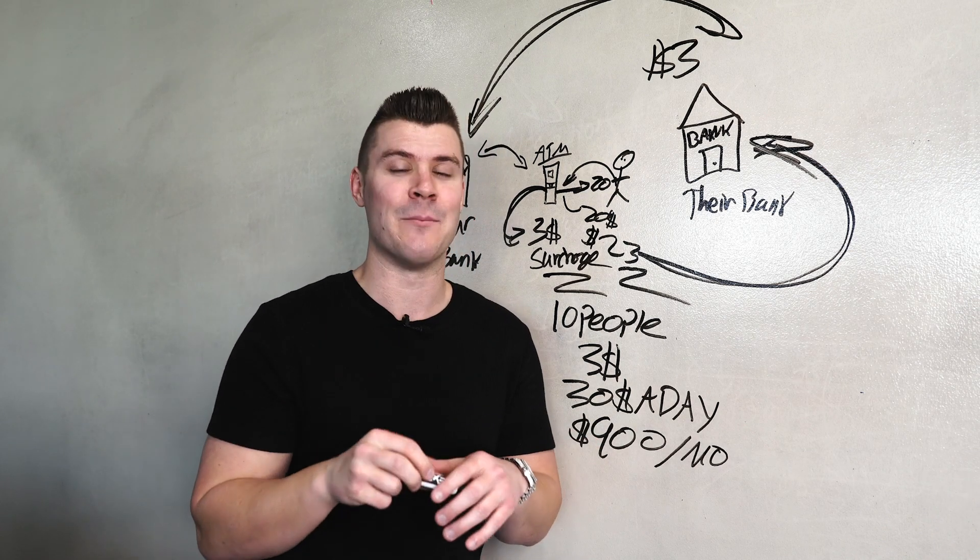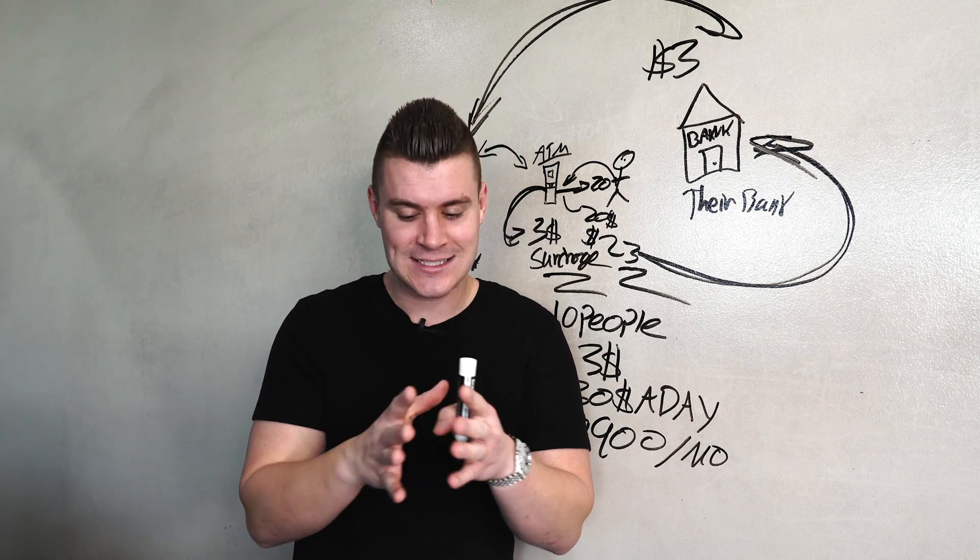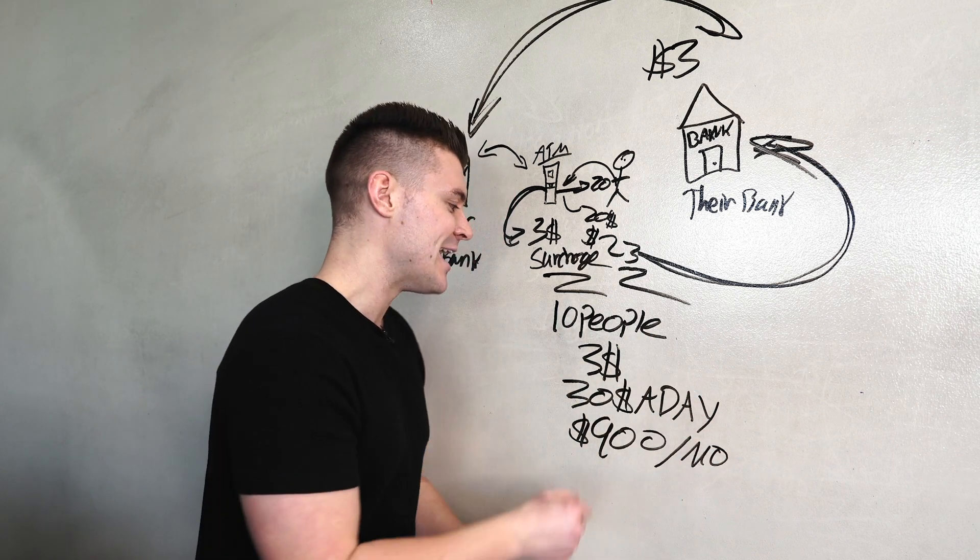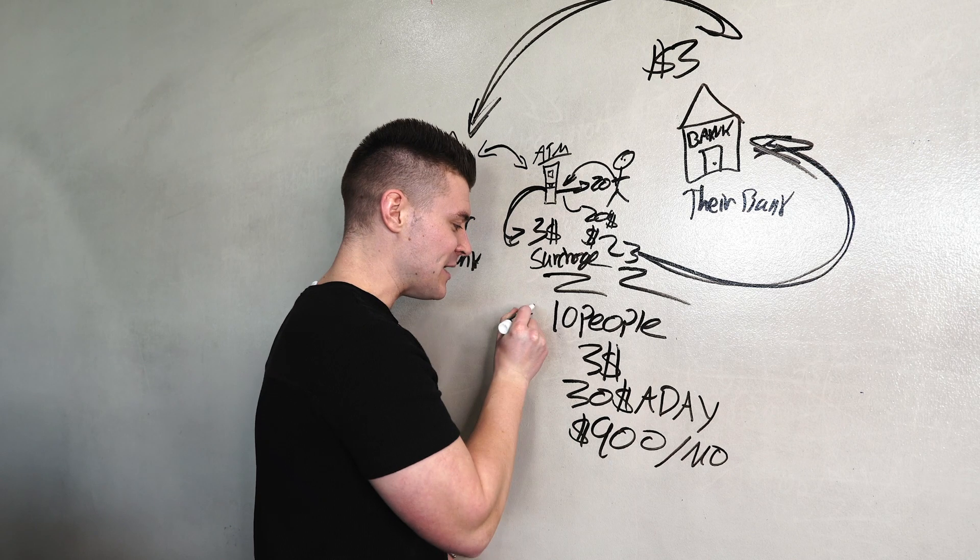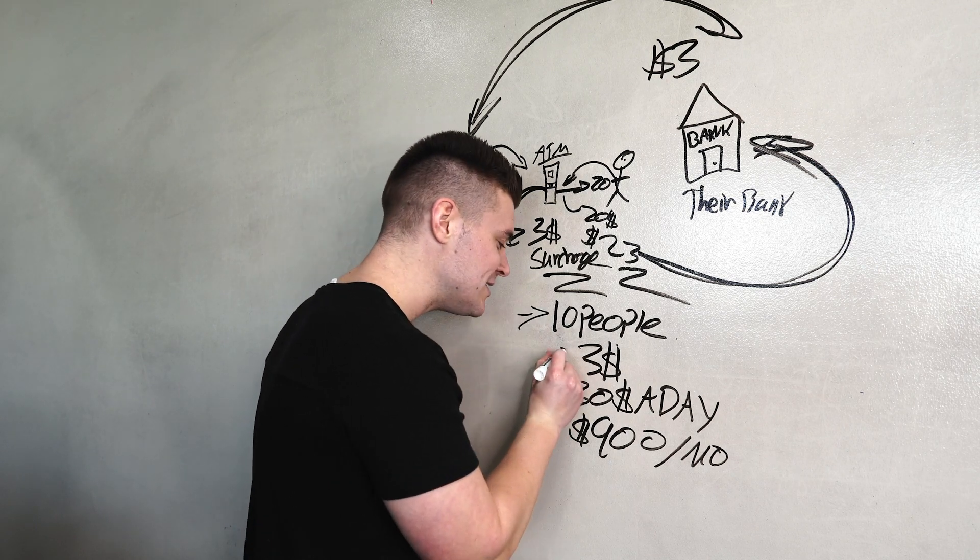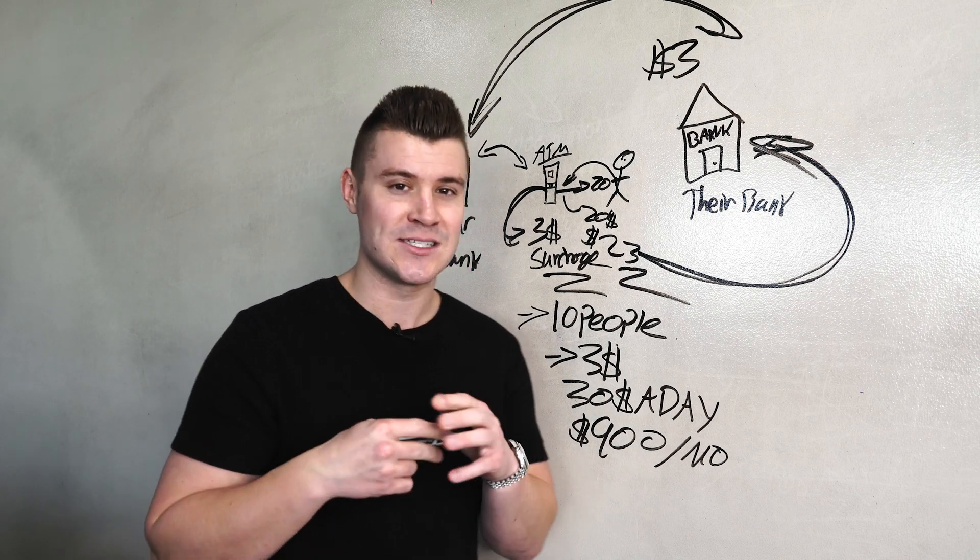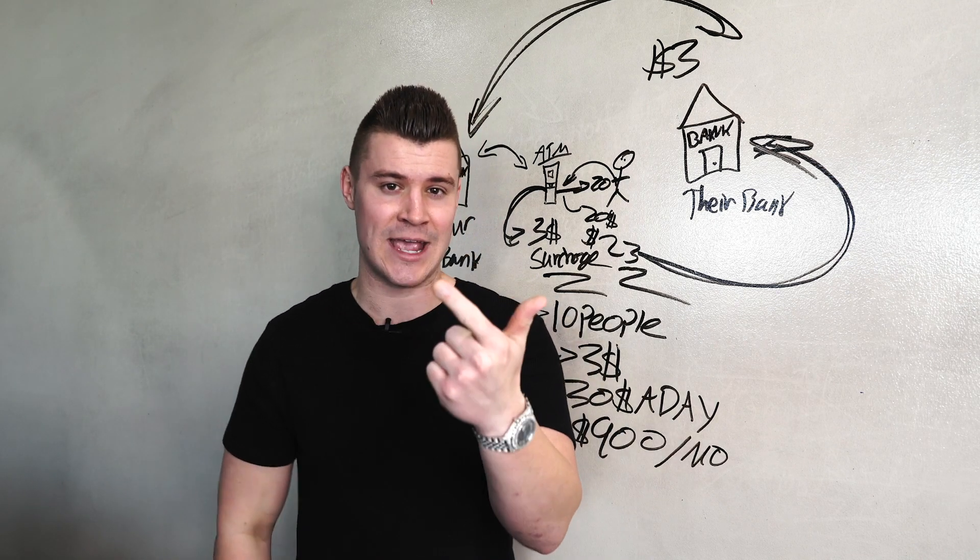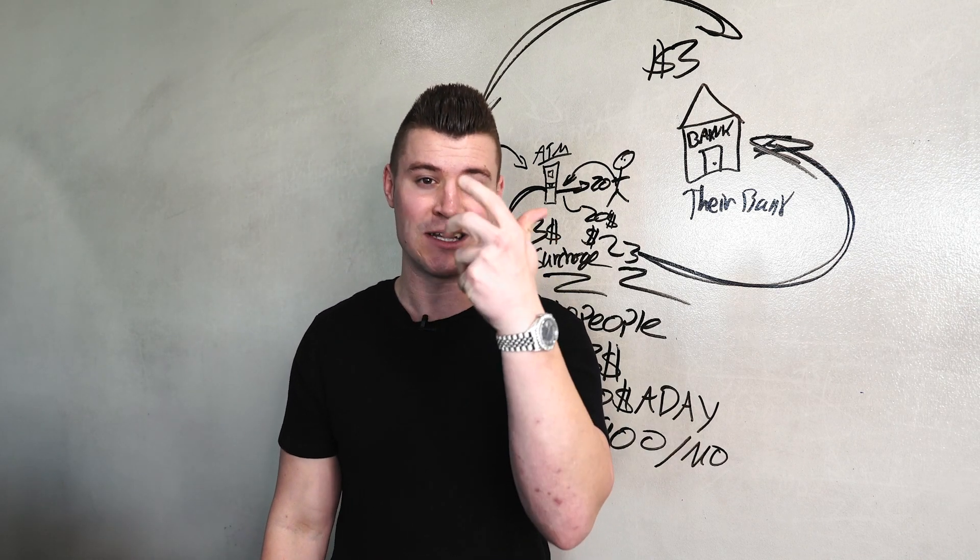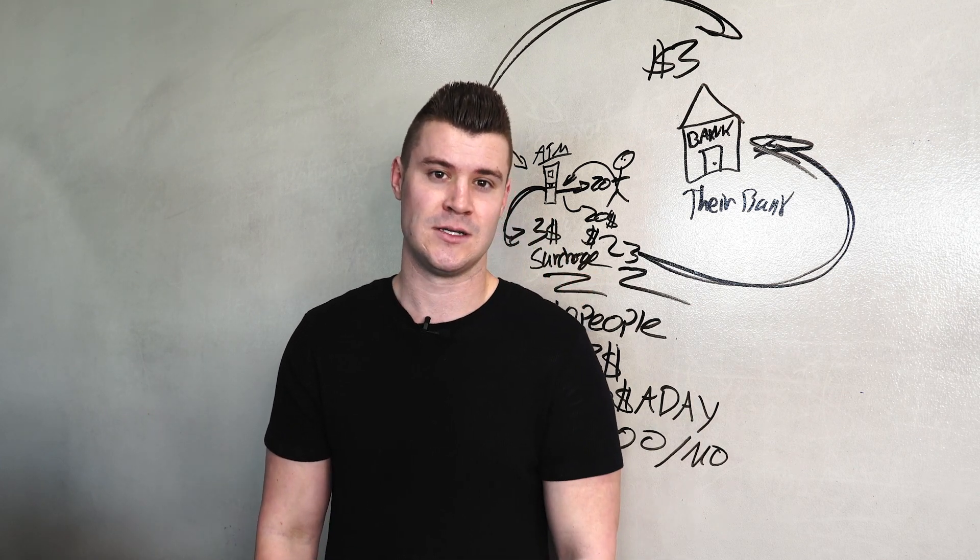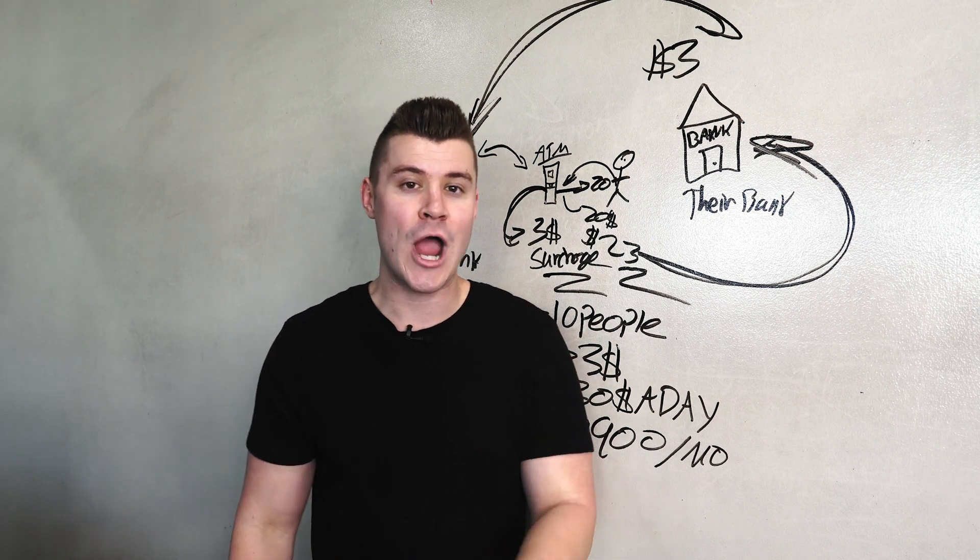Every single transaction that this ATM does, does a $3 surcharge. So for any amount of money that they pull out, they're automatically getting charged $3. Doesn't seem like a lot. But again, as you guys saw in my other videos at scale, this business makes nothing but sense. As you guys can see, 10 people a day at $3 a transaction. Okay. Depending on your guys's location, depending on your guys's area and depending on your guys's business, depending on your guys's employees and depending on your surcharge amount is what's going to come up to this.